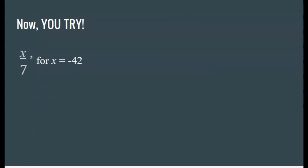Now you're going to try one. This is a simple, straightforward, one-step evaluation. Substitute negative 42 in for x, and hopefully you can simplify it—in other words, divide negative 42 by 7. Look for your answer in the multiple choice.